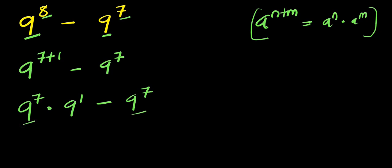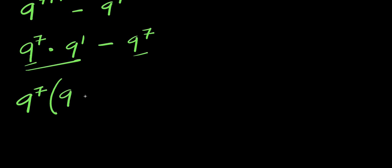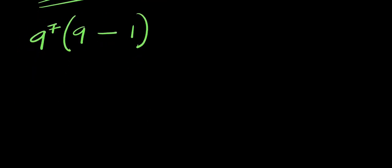Applying that identity here, we have nine to the power seven times nine to the power one, minus nine to the power seven. We can factor out nine to the power seven, giving us nine to the power seven times nine minus one, which equals nine to the power seven times eight.